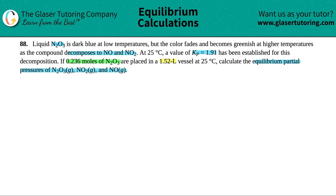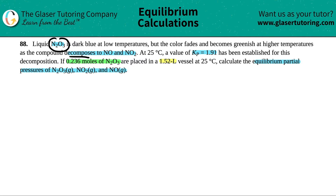They're giving us a Kp value and information on N2O3. We first have to have a balanced equation. Now, there's a conflicting idea here — they're asking us for the pressures of N2O3 gas, NO2 gas, and NO gas. However, in the beginning of the problem, they said that N2O3 was a liquid. So first off, N2O3 is going to decompose. When N2O3 decomposes to NO and NO2, we have to write that down.